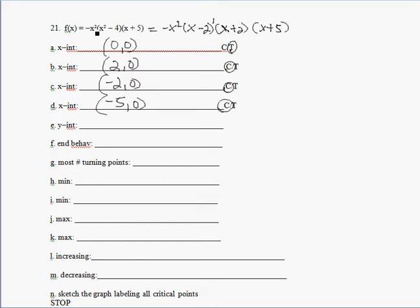My y-intercept, well, if I plug 0 into this function, I get 0 times negative 4 times positive 5, which is 0. So my y-intercept is the origin again, which is the same as this x-intercept.